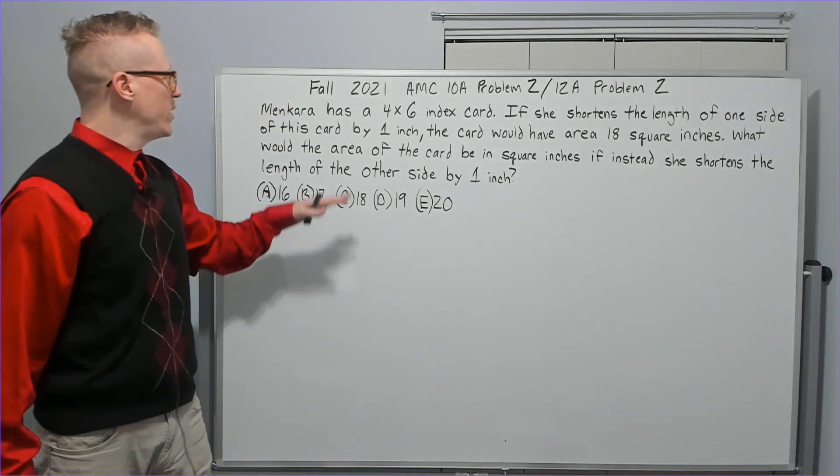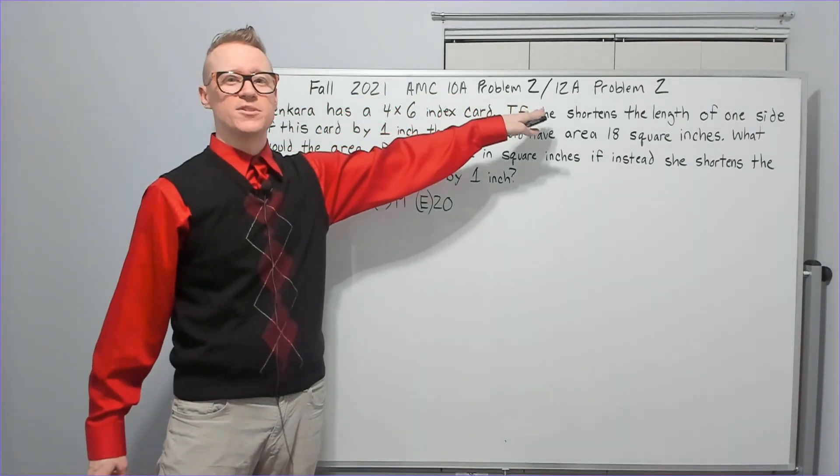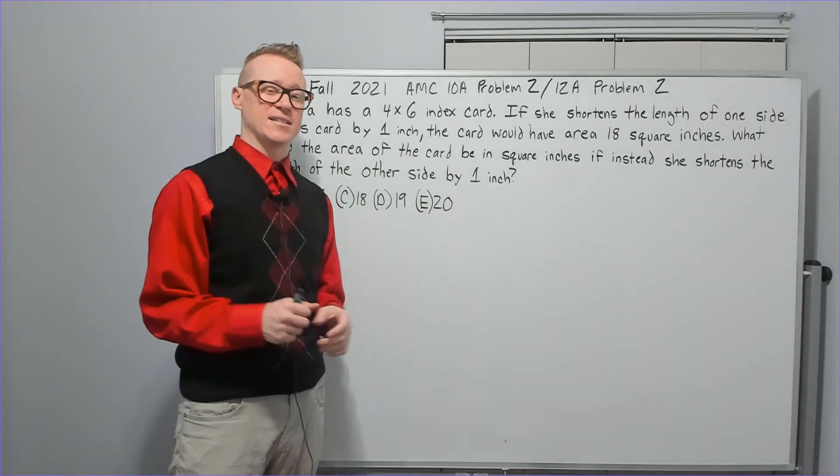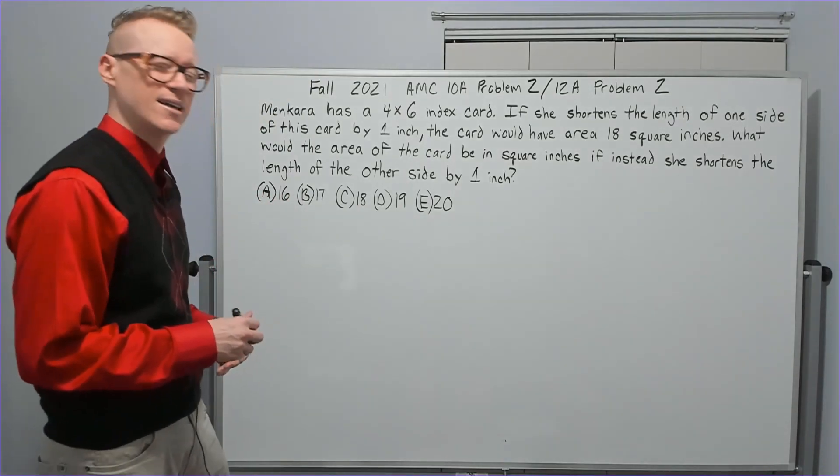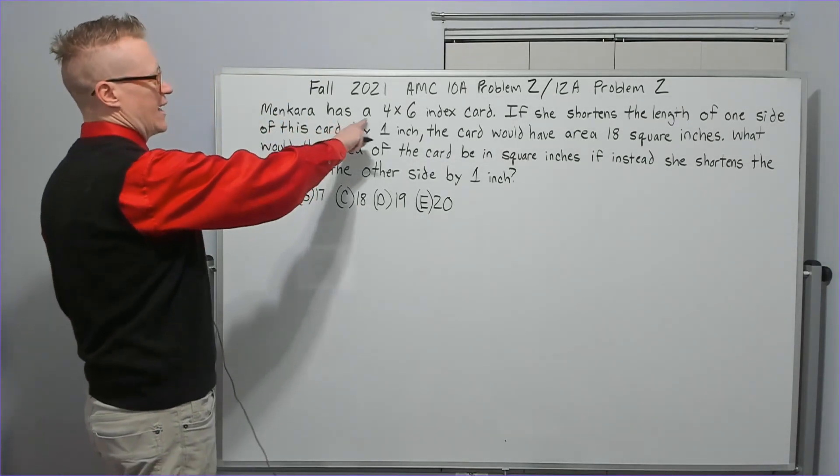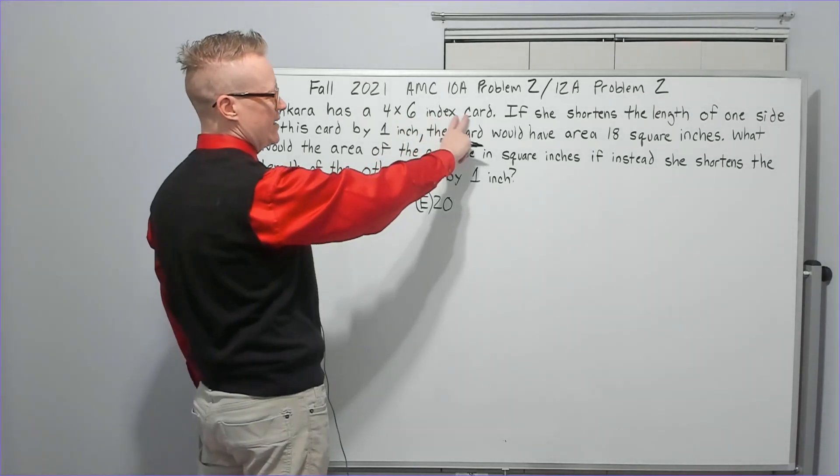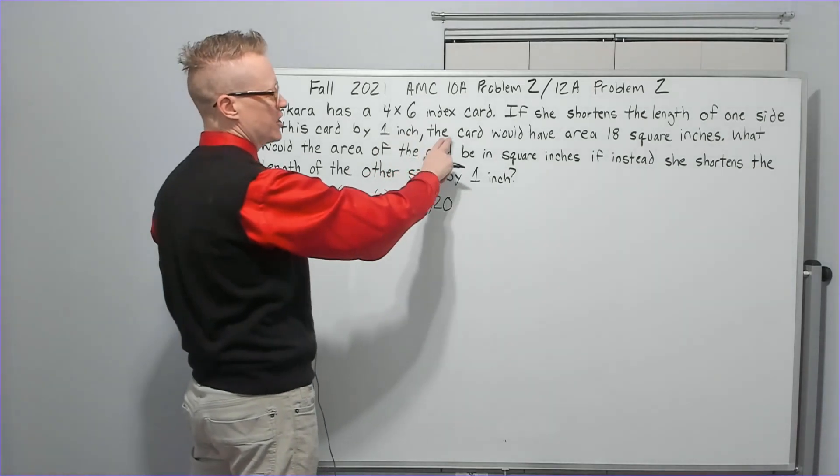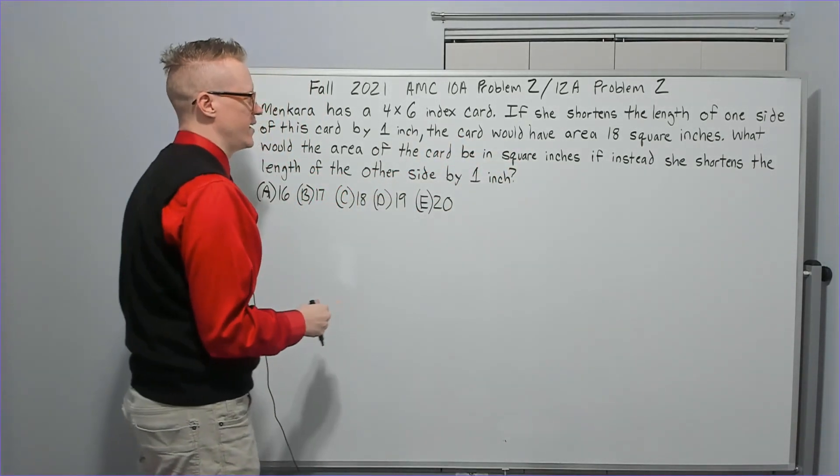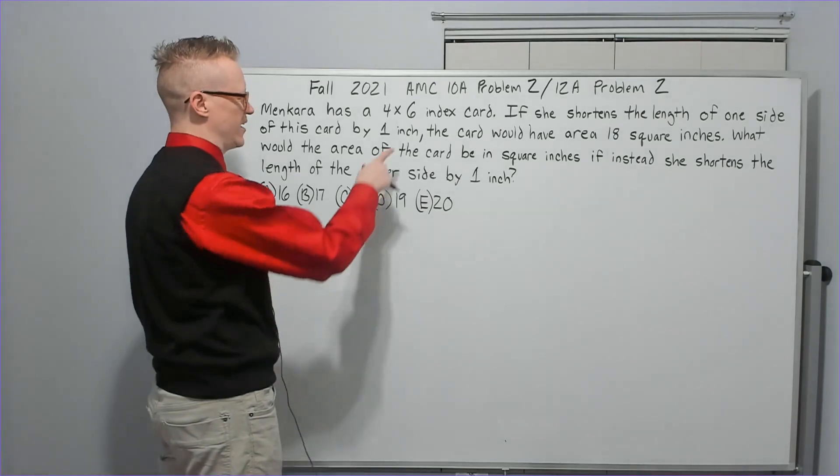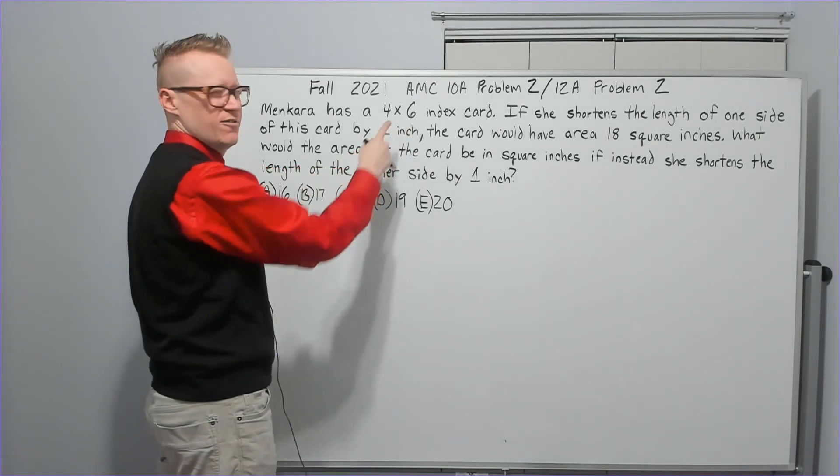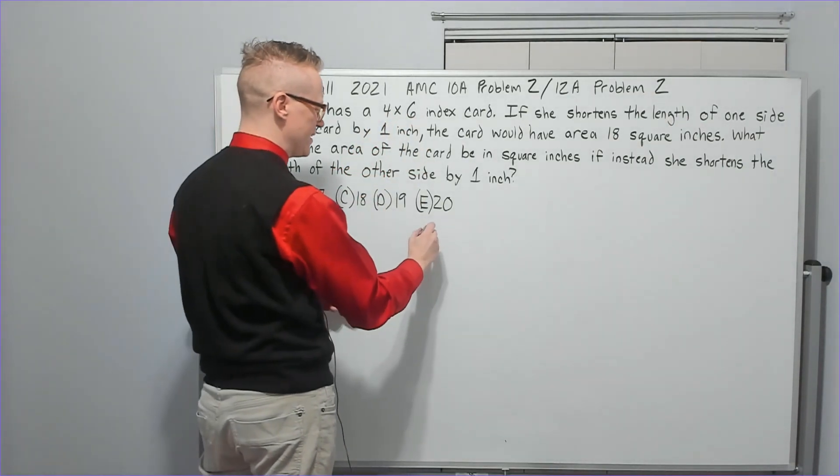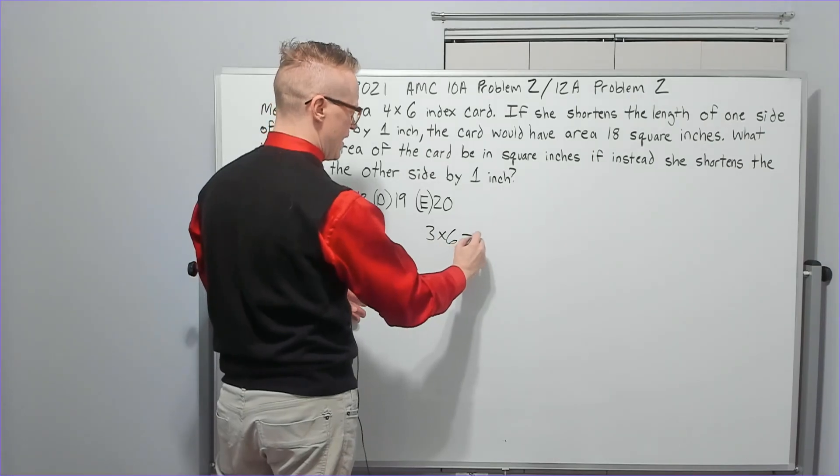So continuing on, we are on to the Fall 2021 10A problem two, also the 12A problem two. There were a lot of the same questions between the two tests in the first ten. Menkara has a four by six index card. If she shortens the length of one side of this card by one inch, the card would have area 18 square inches. If you took an inch off of this dimension, it'd be four by five. That's not it. Must have been the other one. Three by six would be 18.